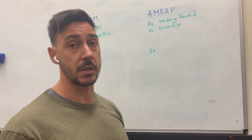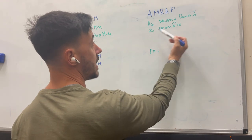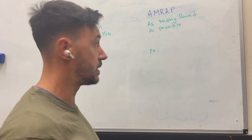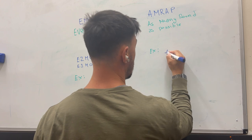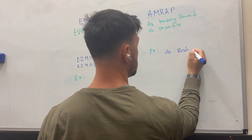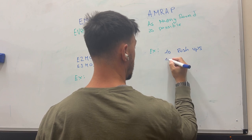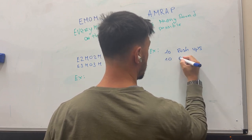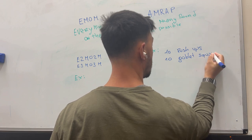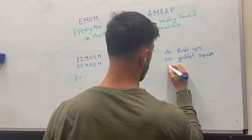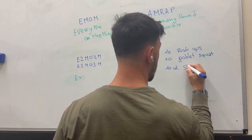Now start with the AMRAP, it's easier to understand. It breaks down into as many rounds as possible. So for instance if we're going to do a couple of exercises, let's say 10 pushups, 10 goblet squat, and 10 calories Ski Erg.